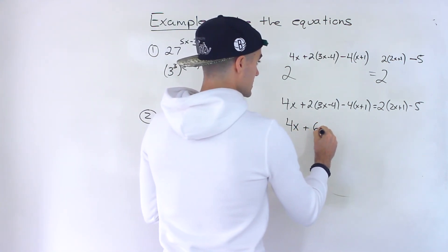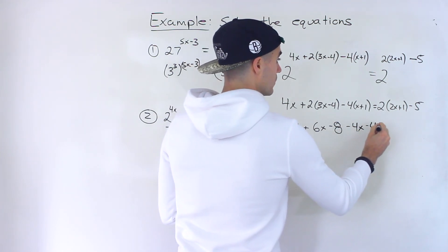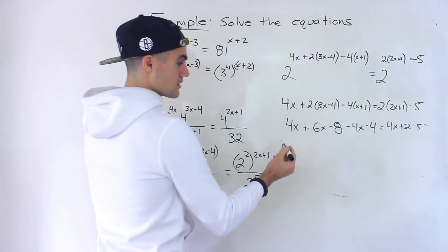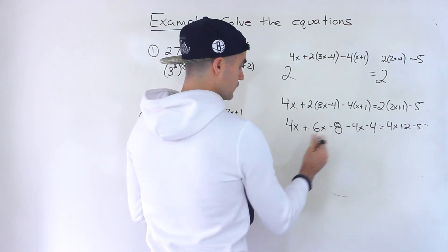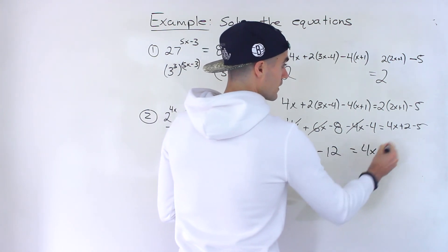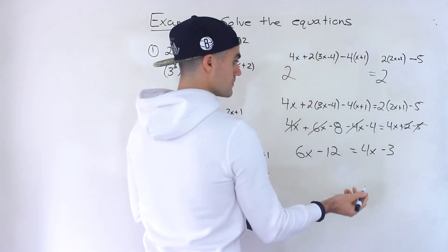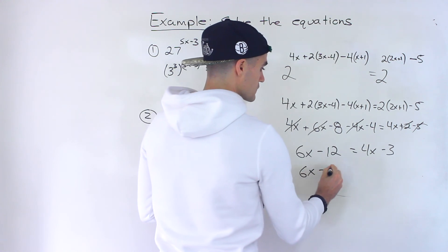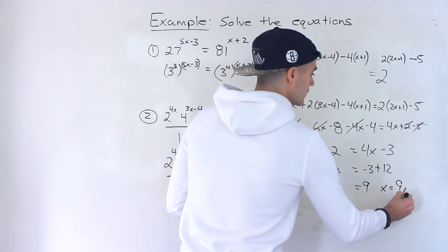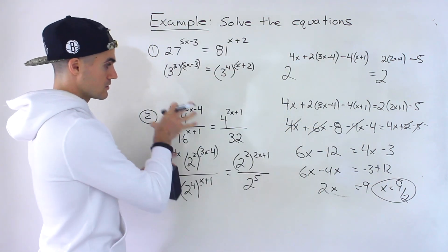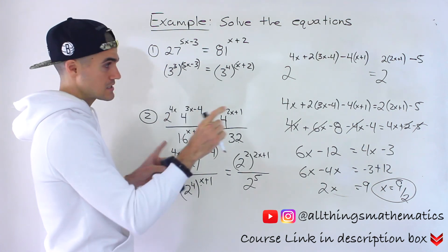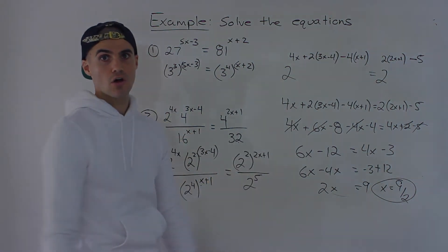So we'd have 4x plus 6x minus 8 minus 4x minus 4 equals 4x plus 2 minus 5. Simplifying: 10x minus 4x gives us 6x, negative 8 minus 4 gives us minus 12, and 2 minus 5 gives minus 3. Bringing the 4x and 12 over, we'd have 6x minus 4x equals negative 3 plus 12, which gives us 2x equals 9, meaning x equals 9 over 2. That's the final answer. Same pattern: get everything in terms of the same base on each side, one exponential expression on each side, drop the bases, and solve the equation.